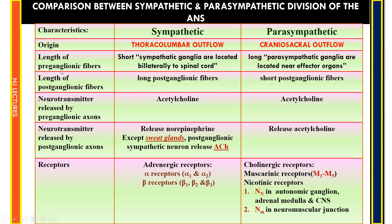Regarding fiber length: in the sympathetic nervous system, the preganglionic fiber is short and located bilaterally to the spinal cord, whereas in the parasympathetic it is long and located near the effector organ. The postganglionic fiber is very long in sympathetic and very short in parasympathetic.